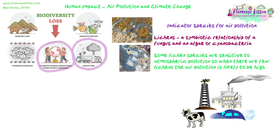Some lichen species are very sensitive to air pollution — atmospheric pollution. When there are very few lichens of a specific species or not many around at all, that's an indication that air pollution is likely to be very high. If there are lots of different lichen species and some that need really clean air looking big and bushy, that indicates air pollution is quite low.